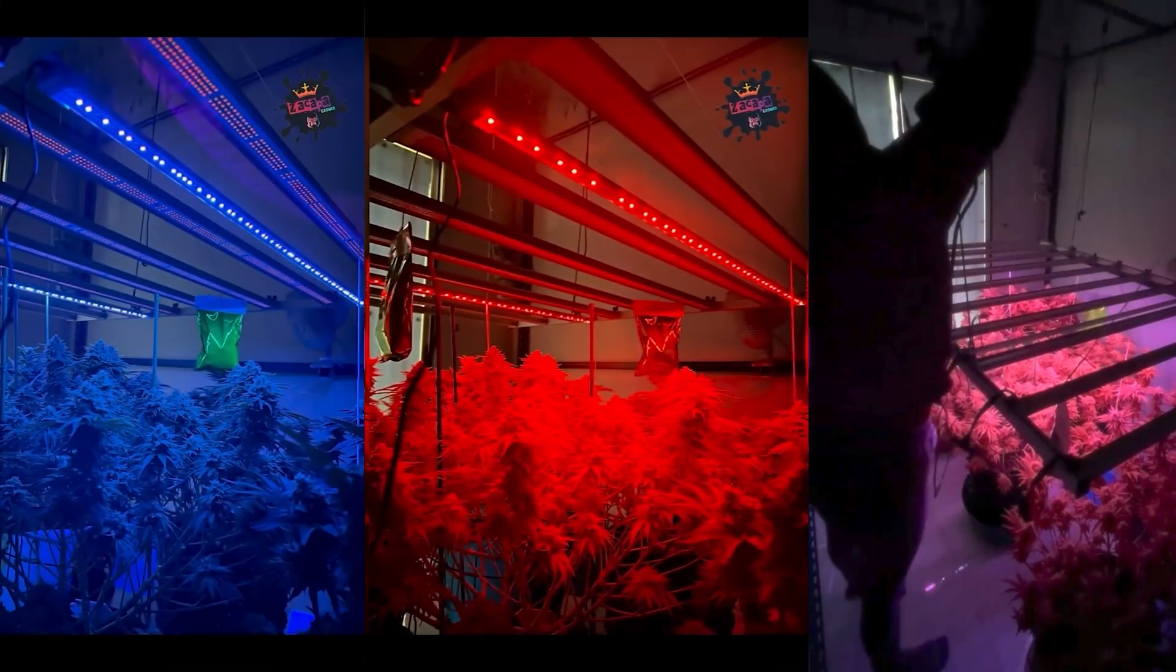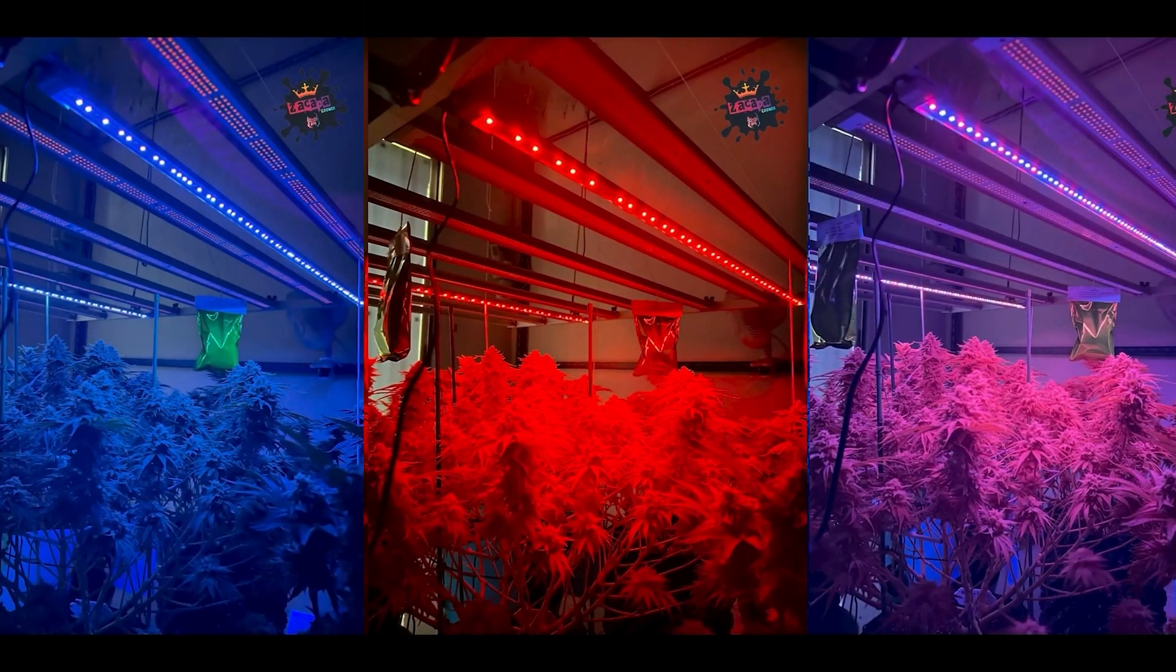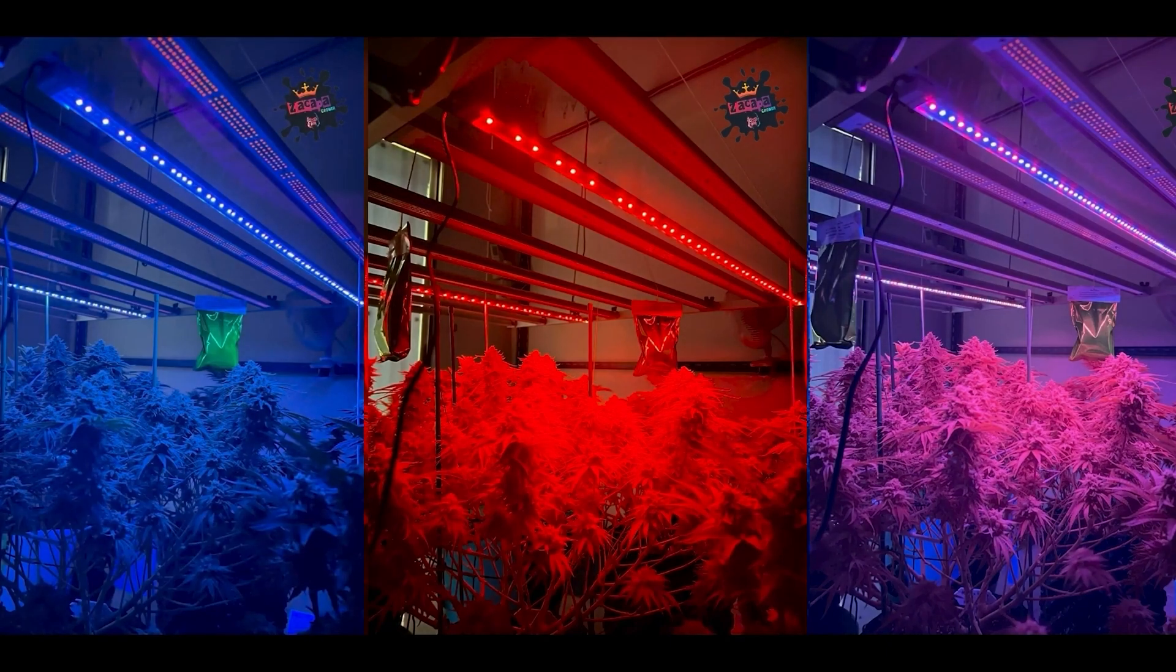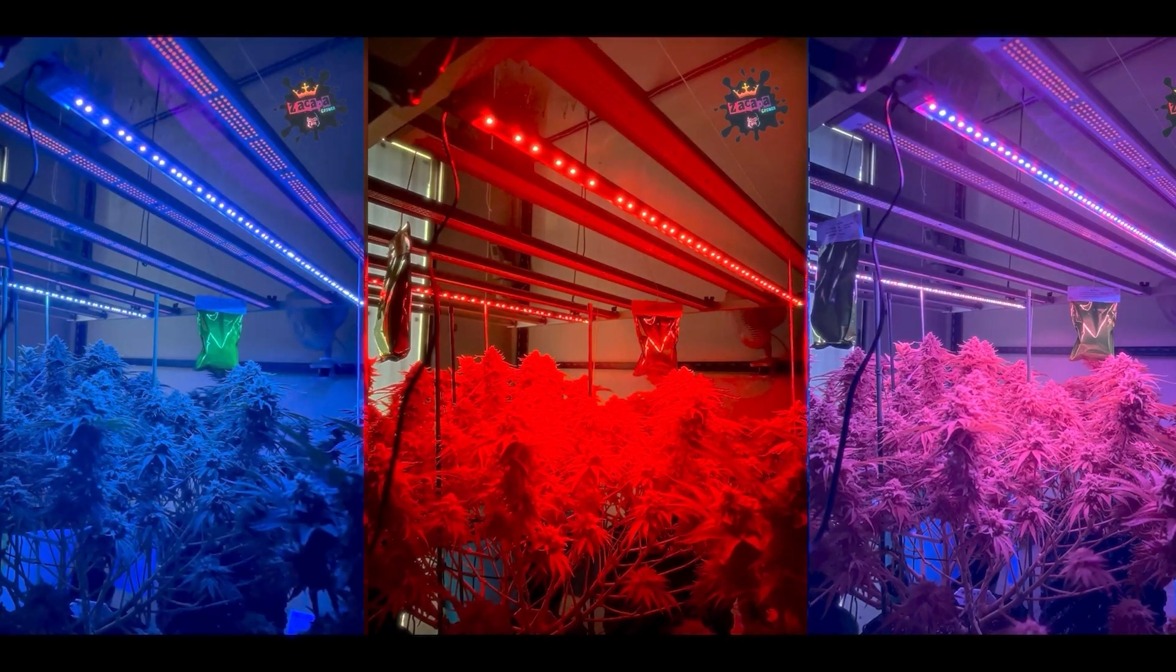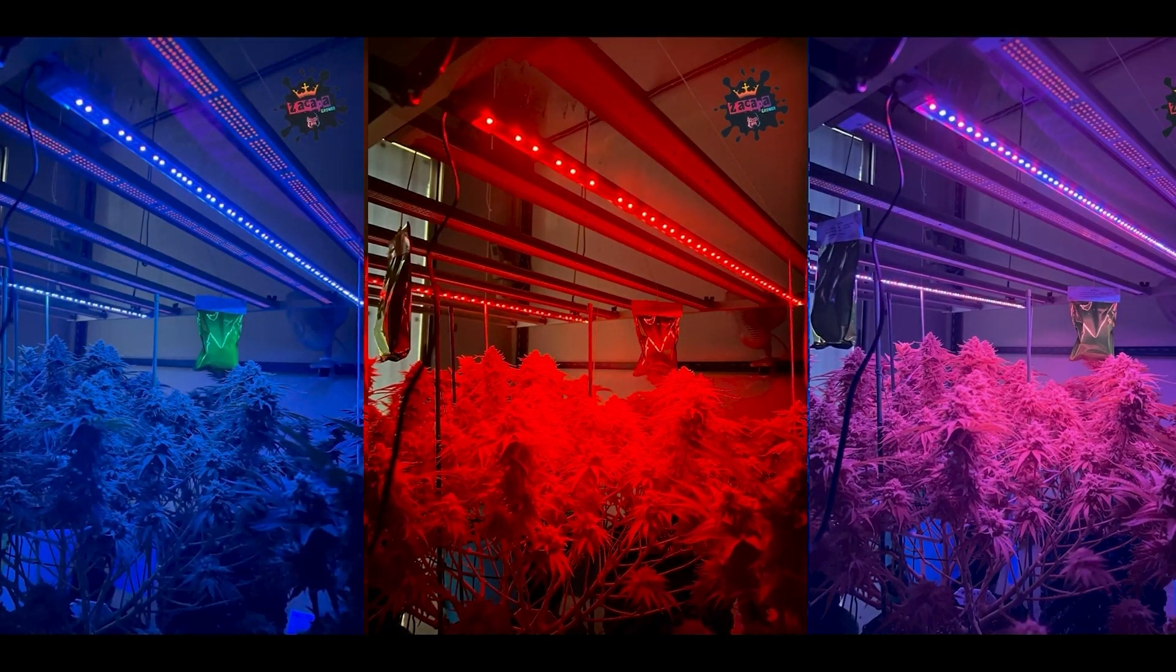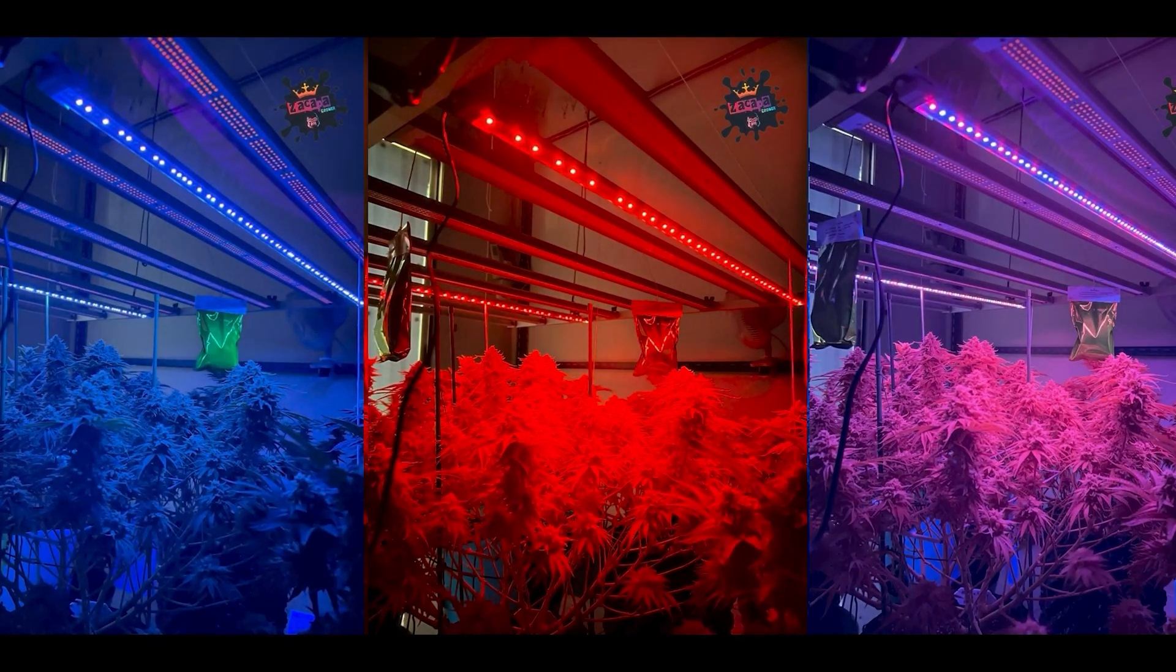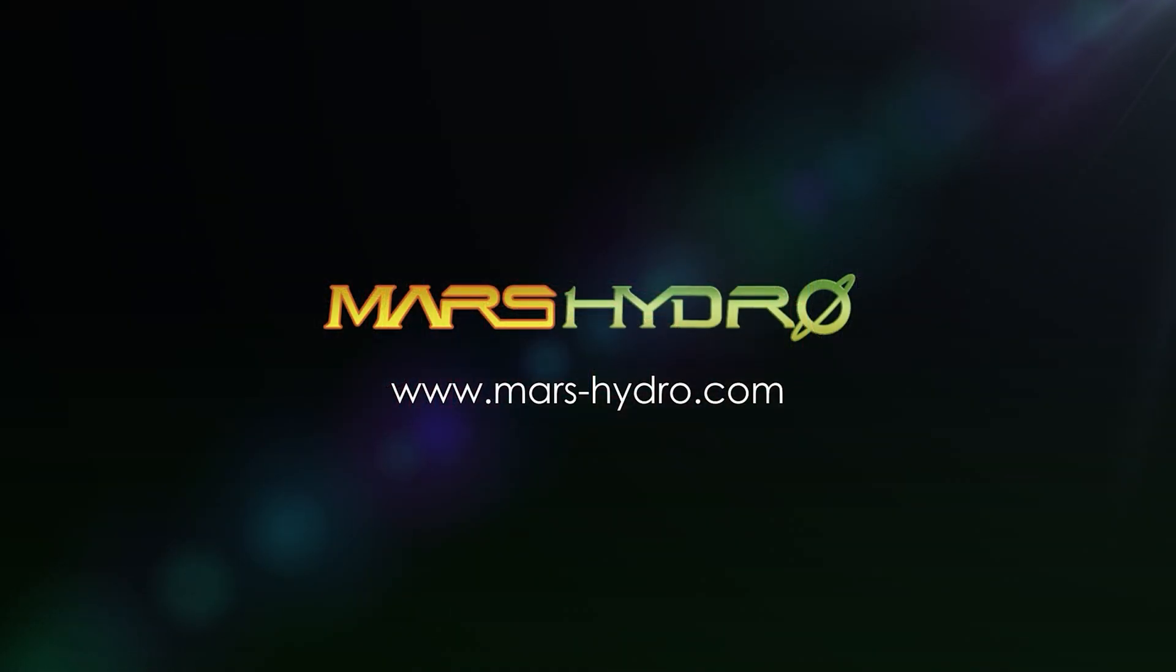UV and IR light can be a game changer for plant growth when used in the correct circumstances. The Mars Hydro UR45 offers independent UV and IR light control, allowing cultivators to utilize both types of light effectively for a bigger and healthier harvest. We hope you found this video informative and feel free to visit our website for more.